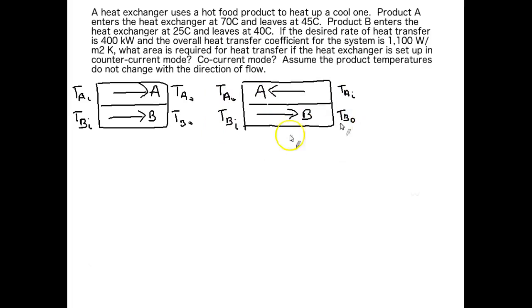All right, there's our diagrams. The left diagram is co-current, the right diagram counter current. And you can see that not only we have streams going in opposite directions for counter current but look at where the temperatures are. TAI and TBO are on the same side where TAO and TBI are on the same side.